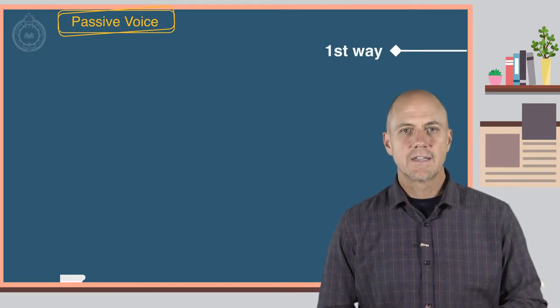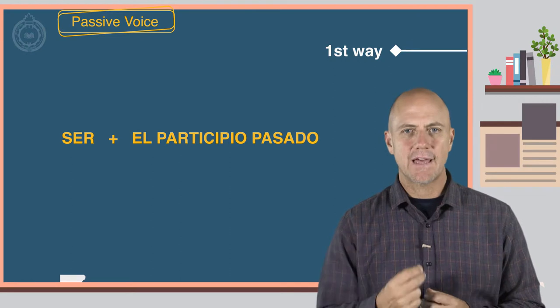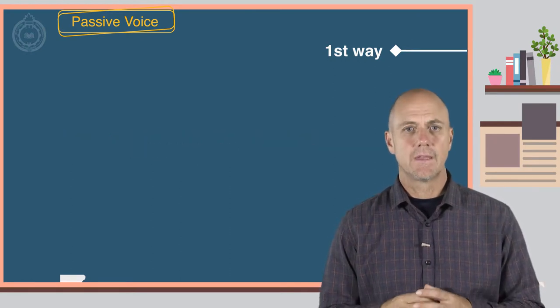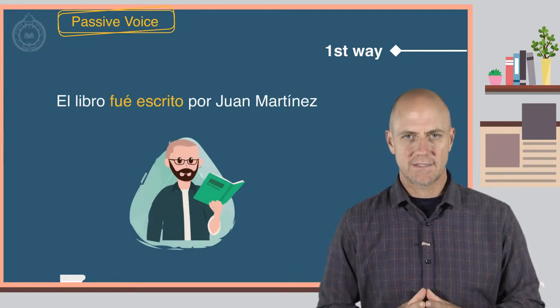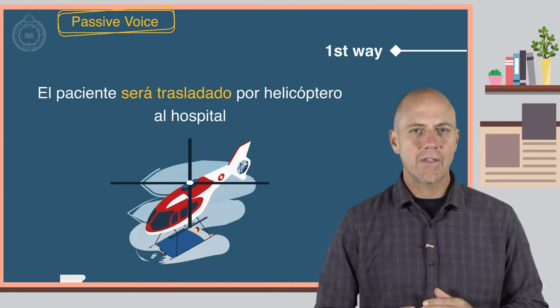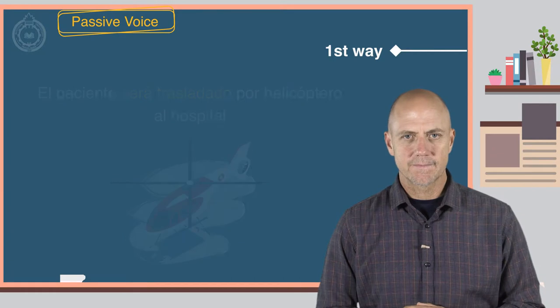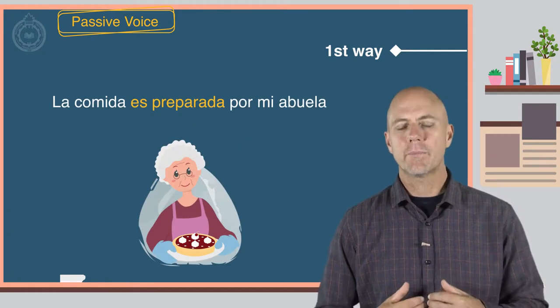The first, ser mas el participio pasado. Here are some examples. El libro fue escrito por Juan Martínez. El paciente será trasladado por helicóptero al hospital. La comida es preparada por mi abuela.